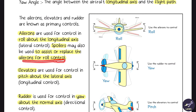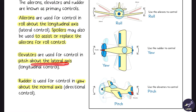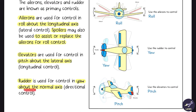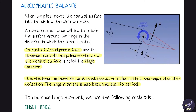Elevators are used for pitching. It is along the longitudinal axis and around or about the lateral axis. Rudder is used for yawing, and it is about the normal axis. Next is aerodynamic balance — whenever the pilot moves any control surface, whether rudder, ailerons, or elevators, the airflow will resist.